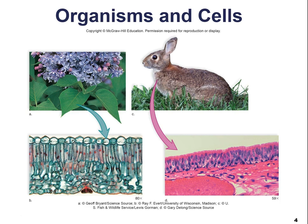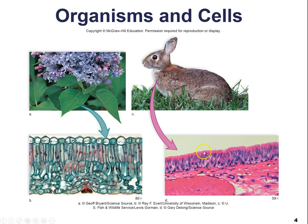Looking at the picture here, we see a lilac plant — they're super fragrant. If you look at the leaf tissue and zoom in, you can see individual cells in a cross section through that lilac leaf. Similarly, here's a cross section through a rabbit's trachea showing individual ciliated epithelial cells. The trachea is the pathway of air going from the throat down to the lungs.